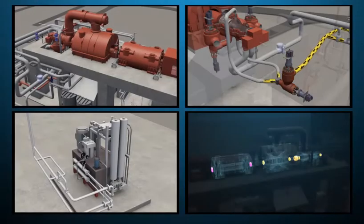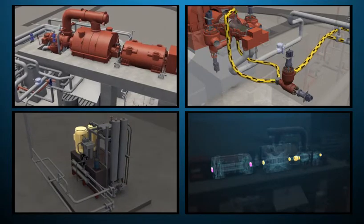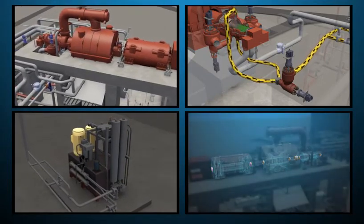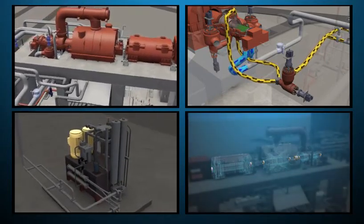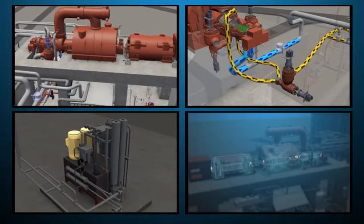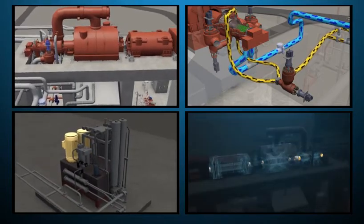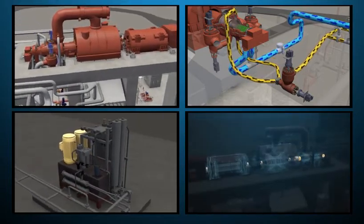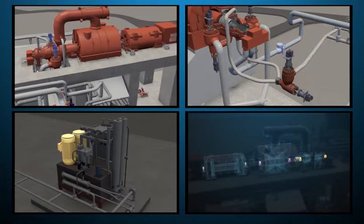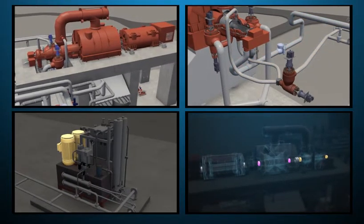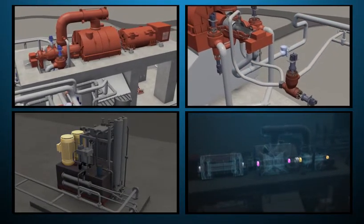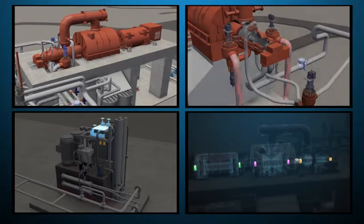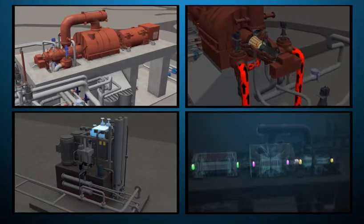The TTP Toshiba TCDF steam turbine course covers design, flow paths, function, and operation of the different sections of the steam turbine and generator. The Toshiba TCDF steam turbine is a 241-megawatt, three-pressure section unit that drives a hydrogen-cooled generator.